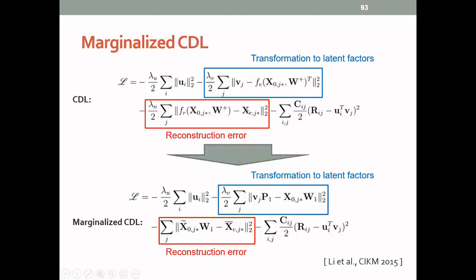Again, then this is the same as this one. And this reconstruction term corresponds to taking this x0 and multiplied by W1, which is the transformation matrix. And this is the marginalized version.